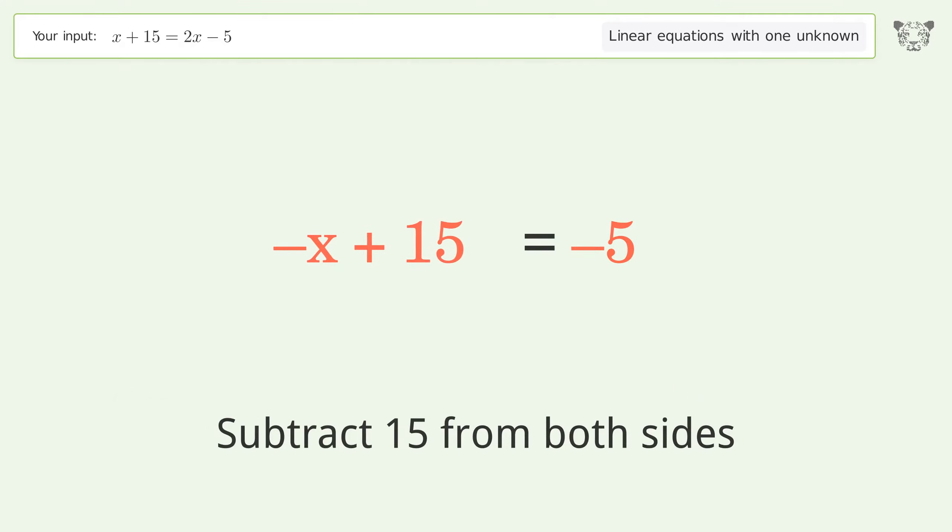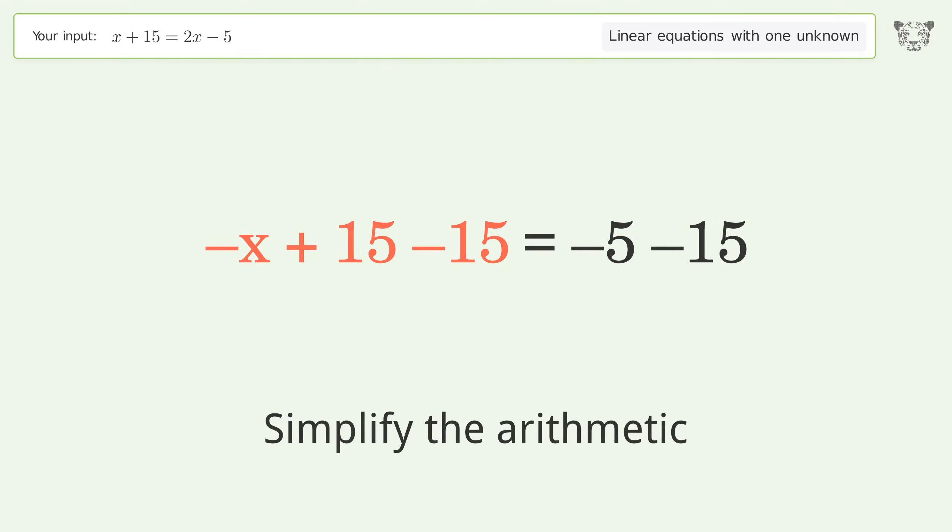Group all constants on the right side of the equation. Subtract 15 from both sides. Simplify the arithmetic.